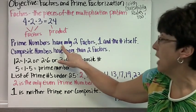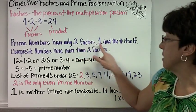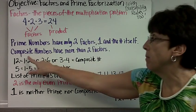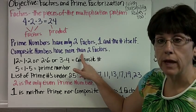Prime numbers have only two factors, the number 1 and the number itself. Composite numbers have more than two factors.